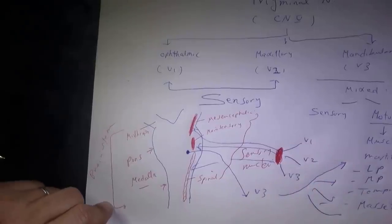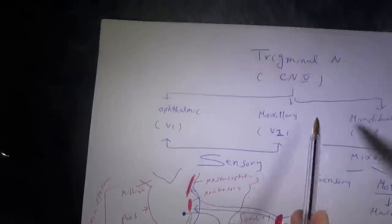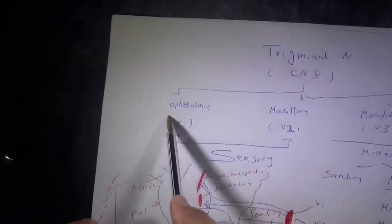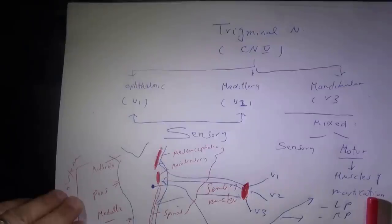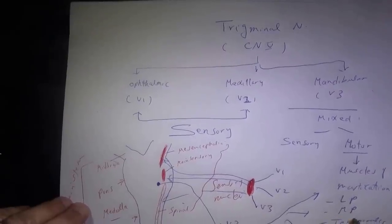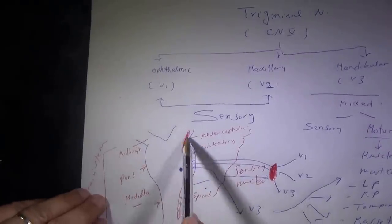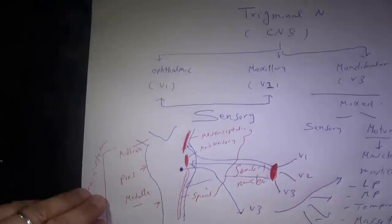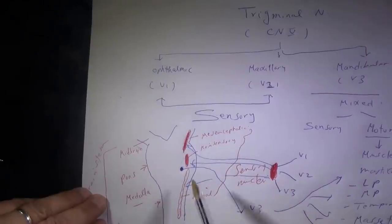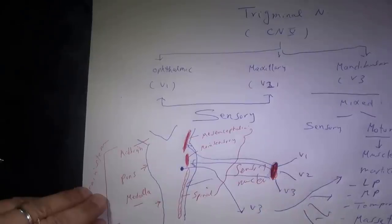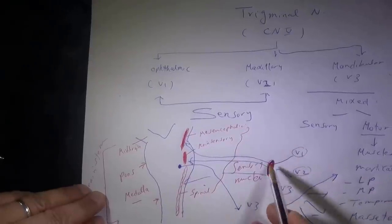Quick review: you have three divisions — ophthalmic and maxillary are purely sensory, while mandibular is mixed with both sensory and motor distribution, primarily to muscles of mastication. Inside the brainstem there are four main nuclei — one small motor nucleus and three sensory nuclei extending through the whole brainstem. The trigeminal ganglion in the middle cranial fossa gives rise to the peripheral processes V1, V2, V3.